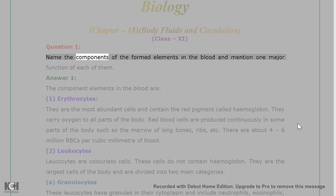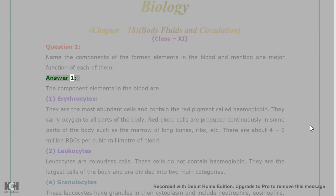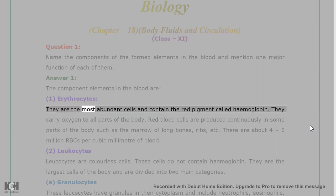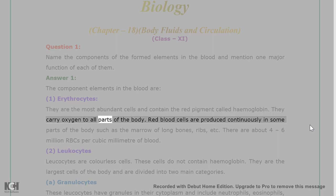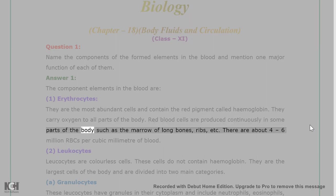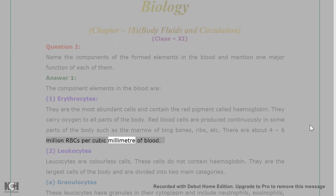Question 1: Name the components of the formed elements in the blood and mention one major function of each of them. Answer 1: The component elements in the blood are: 1. Erythrocytes — they are the most abundant cells and contain the red pigment called hemoglobin. They carry oxygen to all parts of the body. Red blood cells are produced continuously in some parts of the body such as the marrow of long bones, ribs, etc. There are about 4 to 6 million RBCs per cubic millimeter of blood.